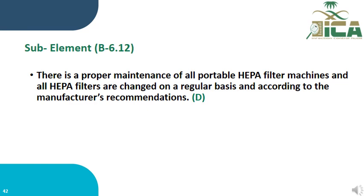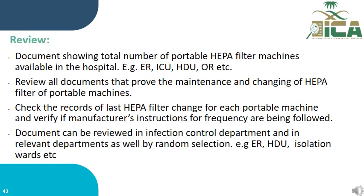P6.12: There is proper maintenance of all portable HEPA filter machines, and all HEPA filters are changed on a regular basis according to manufacturer recommendations, evaluated by documents. Review documents showing the total number of portable HEPA filter machines available in the hospital — such as in the ER, ICUs, HDU, and OR — and check the records of the last HEPA filter change for each portable machine to verify manufacturer instructions for frequency are being followed. Documents can be reviewed in IBC and relevant departments by random selection.